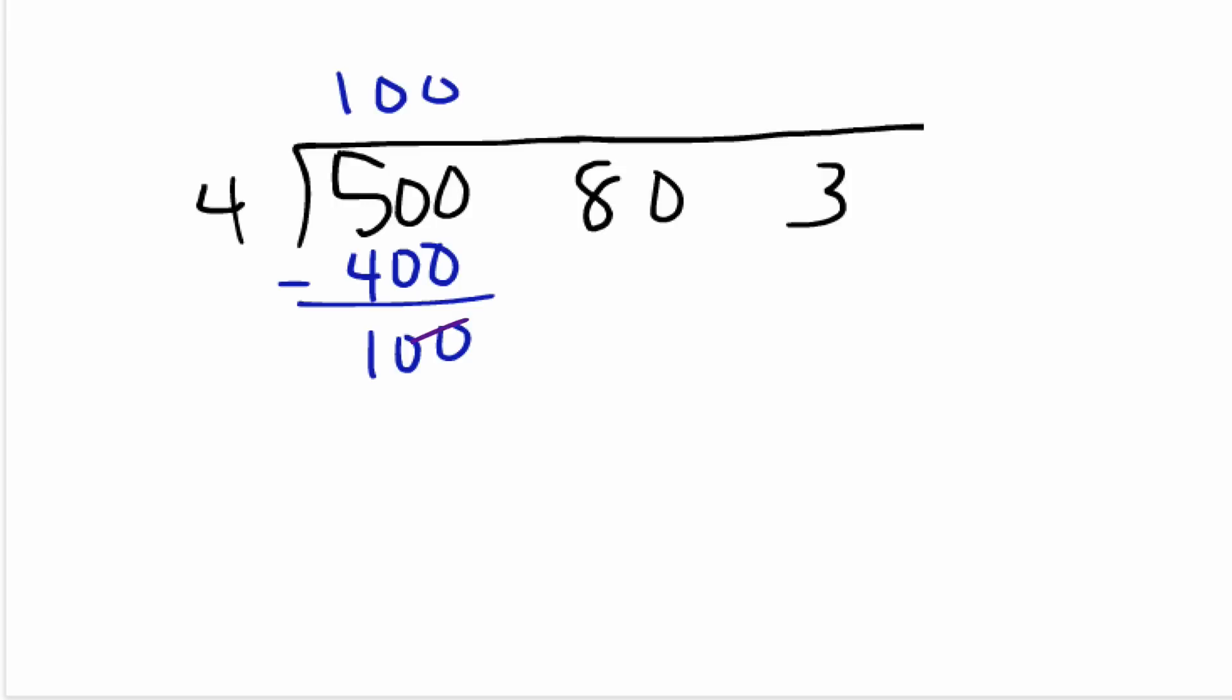So once again, we carry over that 100, and that turns the 80 into 180. So now let's say we don't know exactly how many times 4 goes into 180, and we just guessed 30. So we're going to multiply 30 times 4. That gives us 120, and that gives us 60 left over.